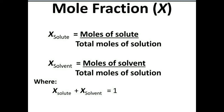Whether a solution has two, three, or four components, we can calculate the mole fraction of each. For three components A, B, and C: zeta of A = moles of A ÷ (moles of A + moles of B + moles of C); zeta of B = moles of B ÷ total moles; and zeta of C = moles of C ÷ total moles of solution.